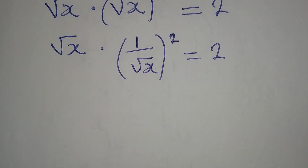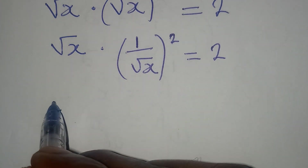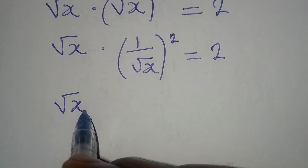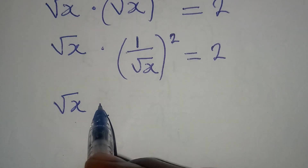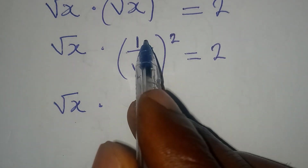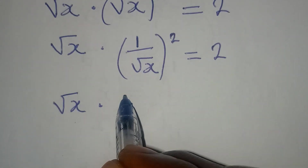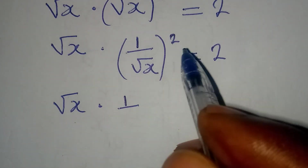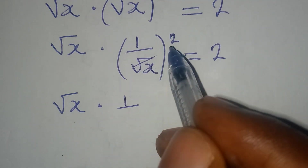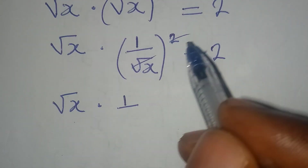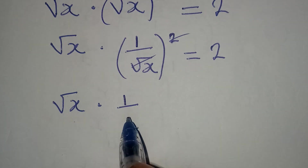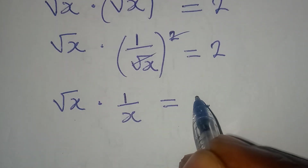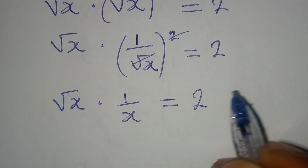If we take it a step further, we will have square root of x multiplied by the square of 1, which is 1. Then the square and the square root will cancel each other, so we have x equal to 2.